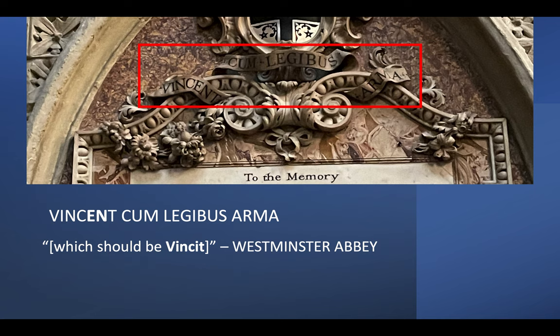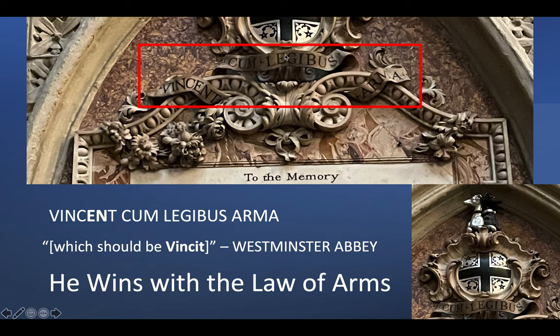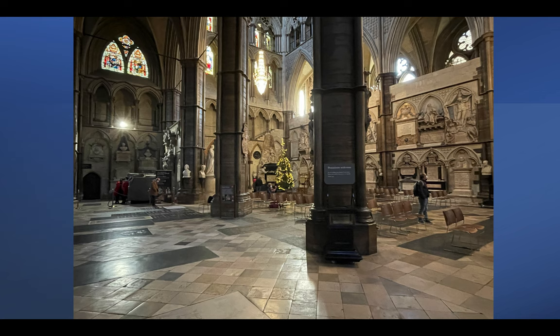Westminster Abbey would tell you there's been a mistake — it's supposed to be 'vincit,' meaning winning or conquering — but I suggest that is not an error. That is the figure of clear exchange, also taught in The Art of English Poesy: he's interchanged the I for his initials EN, or E double-V. But most importantly, the meaning: 'He wins with the law of arms.' 'Winkent' as spelled is actually a man's name, commonly pronounced today as Vincent.